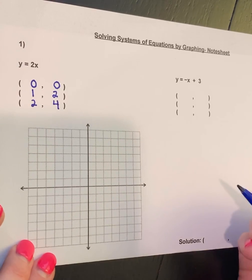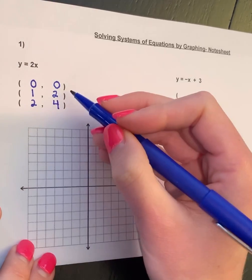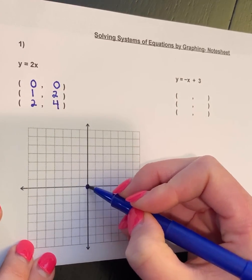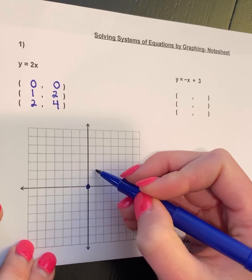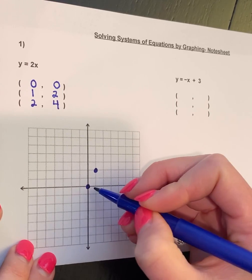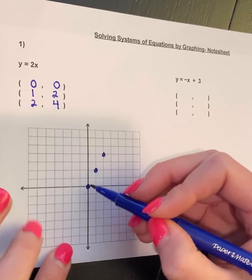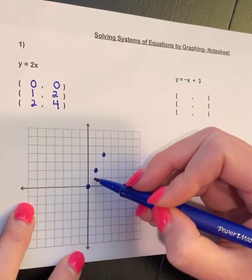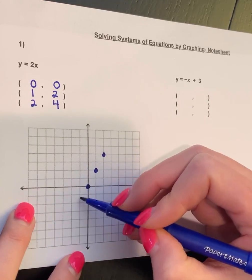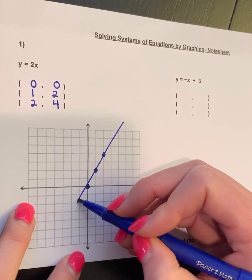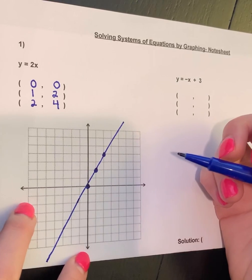Now we're plotting these points, so I'm going to plot (0, 0), I'm going to plot (1, 2), and I'm going to plot (2, 4). Then I'm going to do my best to draw a straight line through them.